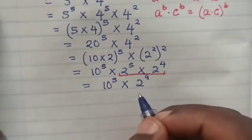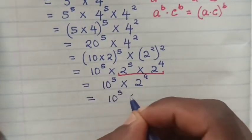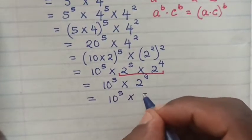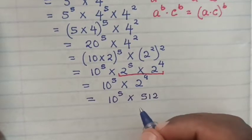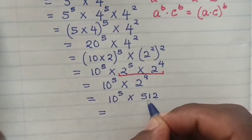So we can see 2^5 × 2^4 is the same as 2^9, and 2^9 is the same as 512.